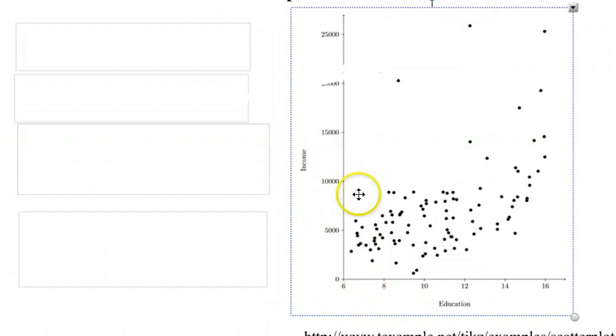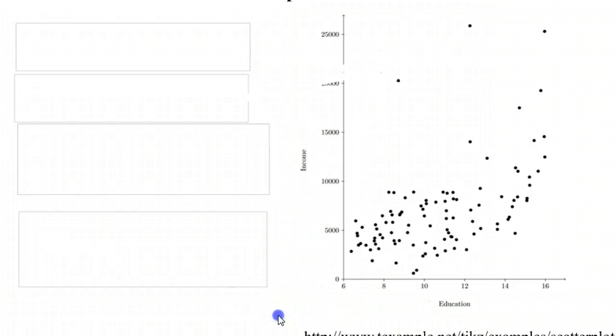First thing is the two quantitative variables. You'll see there's one on the bottom, education, and one on the left here, income.